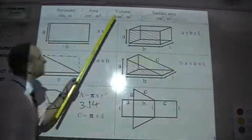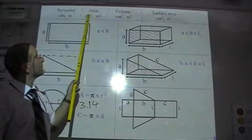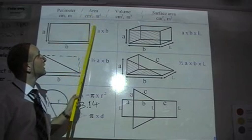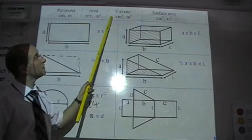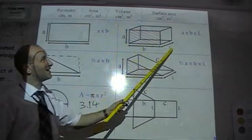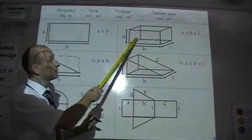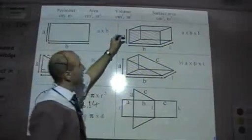Moving on now, volume. Now the same as area showed us with the centimetres squared, the two, because it was two lengths multiplied. Volume has centimetres cubed, metres cubed, millimetres cubed, showing us it's three lengths multiplied. Now, in a cuboid, all I'll do is just multiply all these three together.